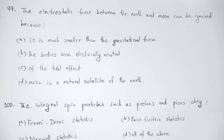The elements of the particles are called fermions and bosons. Fermions have half-integral spin; bosons have integral spin. Fermions follow Fermi-Dirac statistics, bosons follow Bose-Einstein statistics.